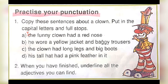B: 'He wore a yellow jacket and baggy trousers.' Make the first letter 'H' capital and put a full stop at the end. C: 'The clown had long legs and big boots.' Make the first letter capital and put a full stop at the end. D: 'His tall hat had a pink feather in it.' Make 'H' capital and put a full stop at the end.